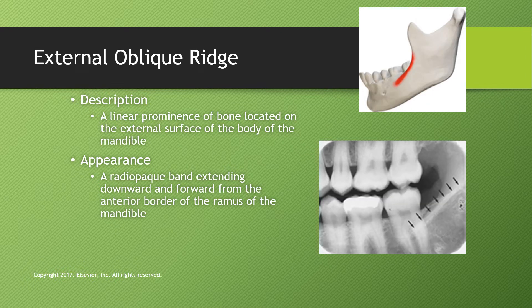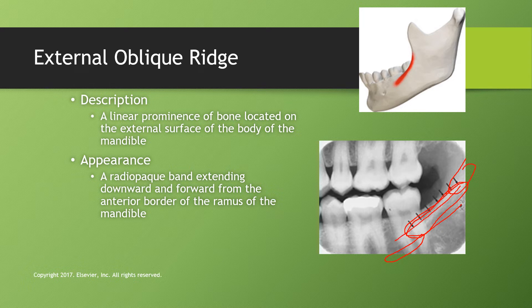The external oblique ridge is a linear prominence of bone on the external surface of the body of the mandible, appearing as a radiopaque band extending downward and forward from the anterior border of the ramus. The external oblique ridge is always higher than the internal oblique ridge. The external starts back in the ramus and stops around the second molar, while the internal oblique ridge starts by the second molar and travels down toward the premolar area.